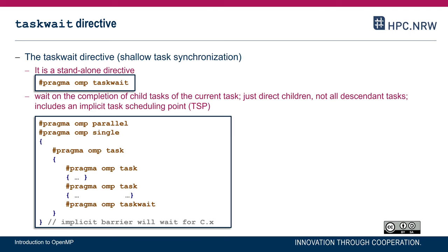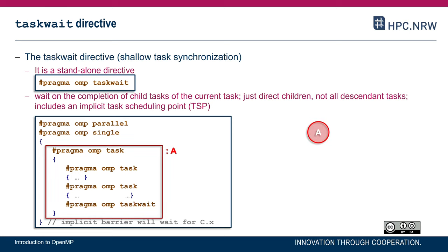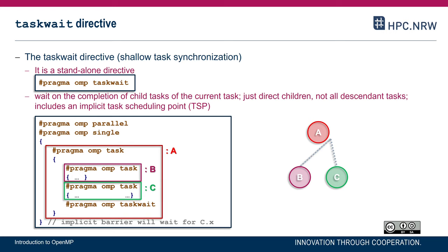To illustrate: we have a parallel region with a single, so one thread executes the body of the single. This creates a task, which then consists of two more tasks and a taskwait. The taskwait construct will wait only for the completion of those direct child tasks. If we refer to the parent task as A, the taskwait will wait for B and C, but not for any further tasks C1, C2, and so forth that C or B might create.